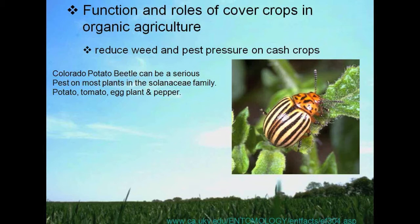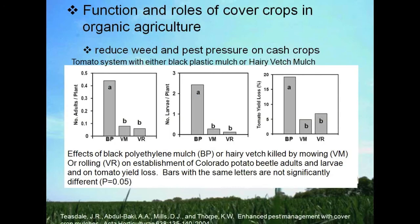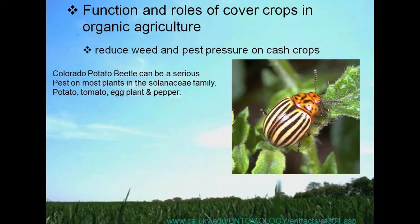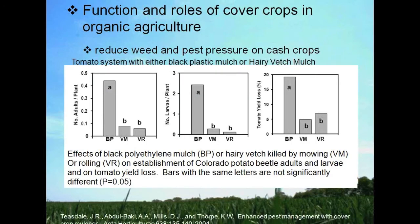Another way cover crops can assist in reducing pest pressure is through the environment that the mulches create on the soil surface. In the case of Colorado potato beetles, which can be serious pests on many Solanaceous plants, in a tomato system with a vetch mulch on the surface we see a reduction in both the number of adult potato beetles and the number of larvae on the tomato plants. This translates into a reduction in tomato yield loss due to potato beetle feeding.